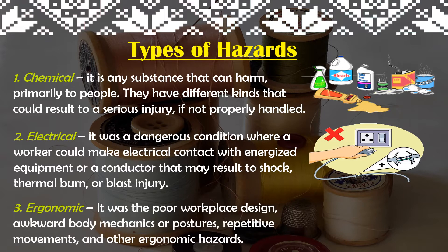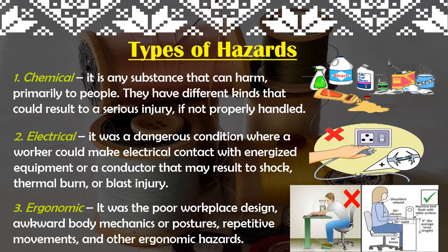Next is the ergonomic hazard — poor workplace design, awkward body mechanics or postures, and repetitive movements. As you can see in the picture, the boy sitting at the sewing machine has an incorrect position — his posture is wrong. If this is done repeatedly, it can lead to back pain and body aches. We should maintain proper position while sewing. Another example is lifting heavy objects, which can cause pain in the hands, shoulders, or other parts of the body.